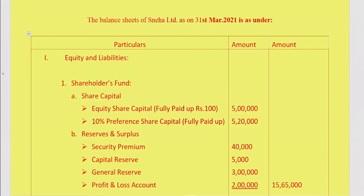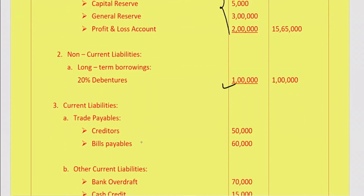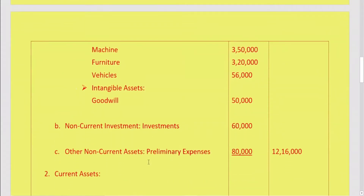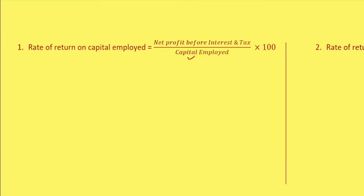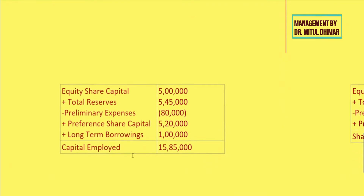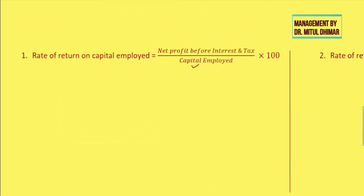To find capital employed, I add equity share capital, preference share capital, reserves after deducting fictitious assets, and long-term borrowings. From the balance sheet: equity share capital 5 lakh, 10% preference share capital 5 lakh, reserves 20,000, long-term borrowings — 20% debentures of 1 lakh. Fictitious assets are preliminary expenses of 80,000. So capital employed is 5 lakh plus 5 lakh 45,000 reserves less 80,000, plus preference share capital plus debentures, giving a final answer of 15 lakh 85,000.